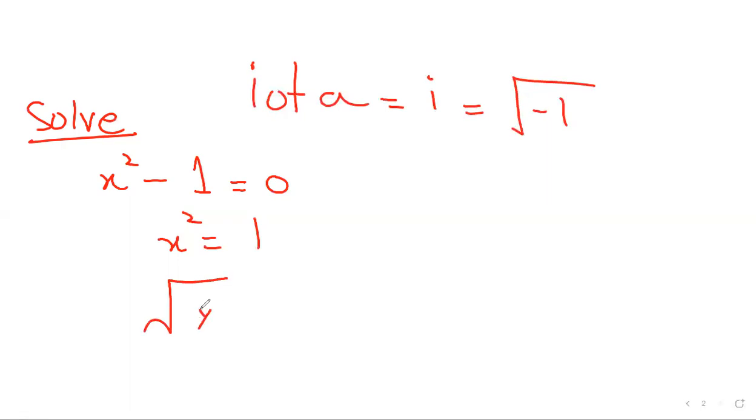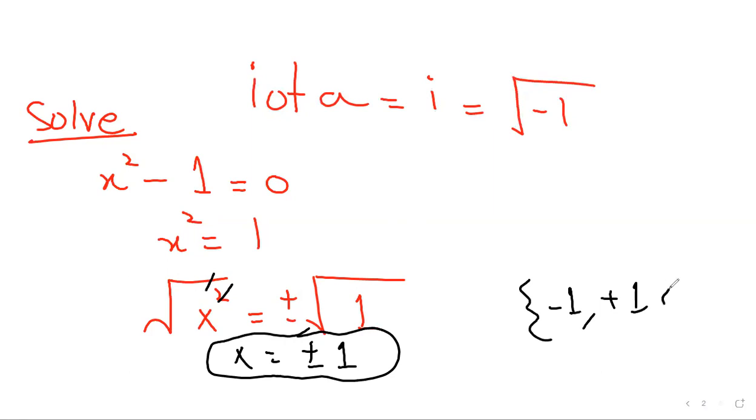Now we need to find out the value of the variable. Whenever we apply the square root sign, we always introduce the plus and minus sign. When we introduce the plus and minus sign with under root, we got the two solutions in the quadratic: minus 1 and plus 1. This is the solution set or the value of the variable.